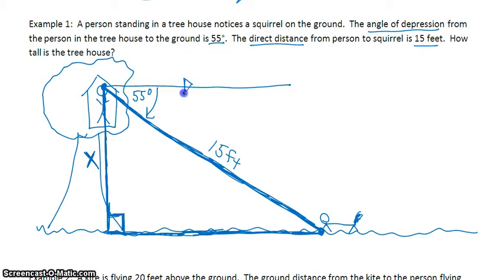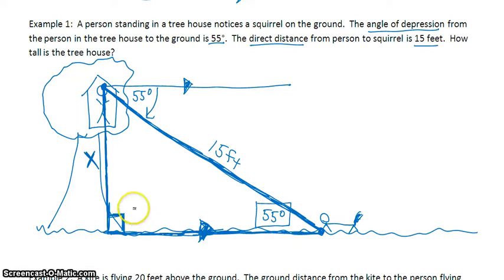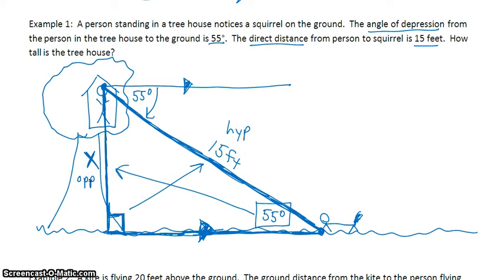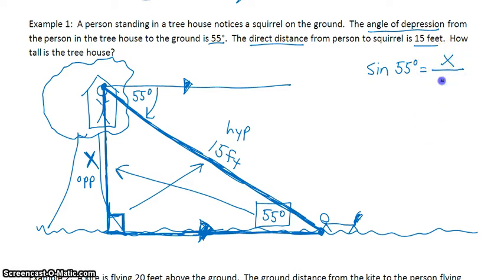Remember, the horizon line and the ground are parallel. So if the angle of depression is 55 degrees, it's congruent to this angle down here — they're alternate interior angles. To solve for x, we know this angle is 55 degrees and 15 feet is the hypotenuse. x is opposite 55 degrees, so the trig ratio we're going to use is sine, which involves the opposite side and the hypotenuse. Sine of 55 degrees equals x over 15.